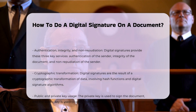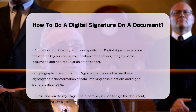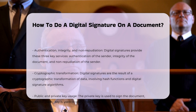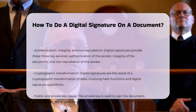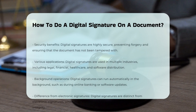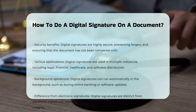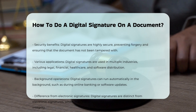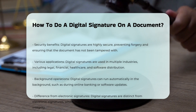Once you have a digital signature, the process involves selecting the document you wish to sign. After that, you will use the software to apply your digital signature. The signature will be encrypted and attached to the document. It is important to ensure that the recipient can verify your signature.